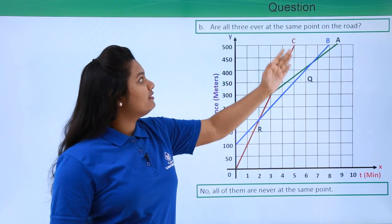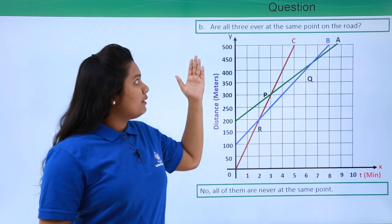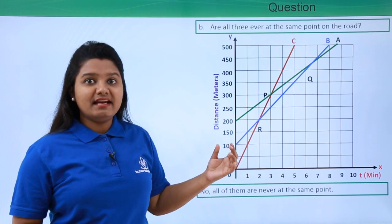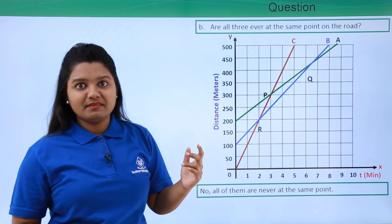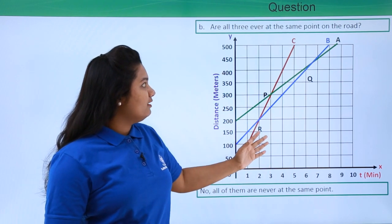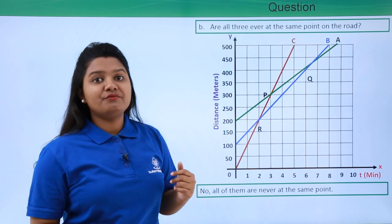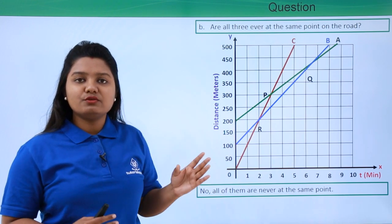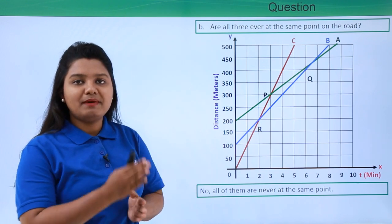The next question is: are all three ever at the same point on the road? To answer this, we should know that whenever the distance-time graph of one body coincides with the distance-time graph of another body, we say that at that instant of time these two bodies were at the same point on the road.